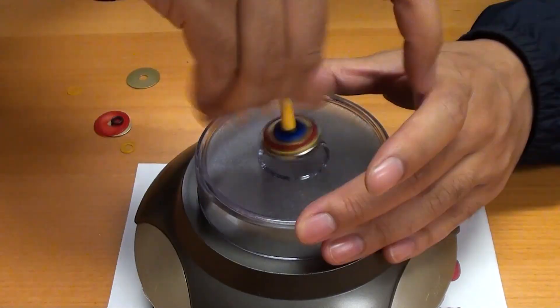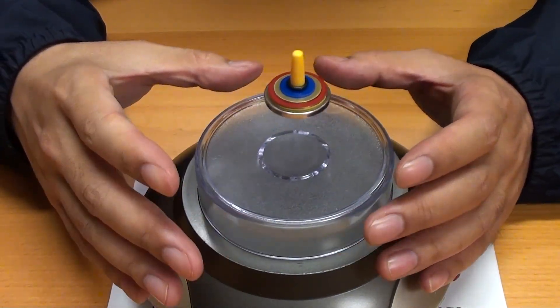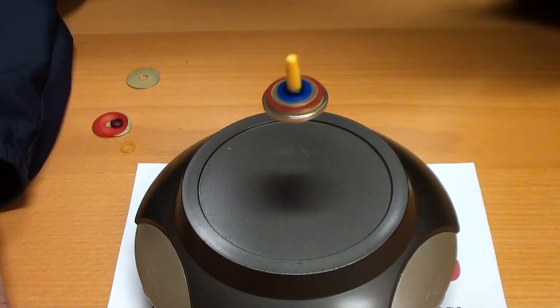When everything is perfectly balanced the top will levitate just above the base magnet. And there we go.